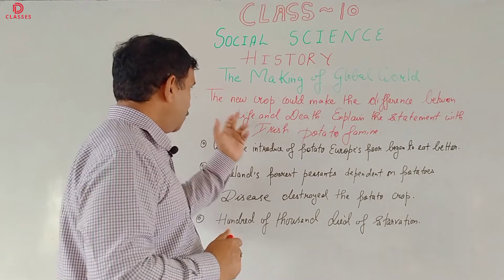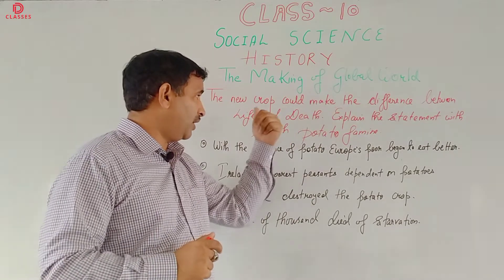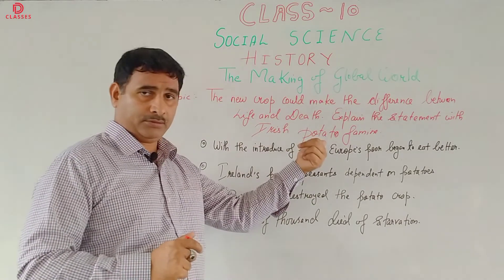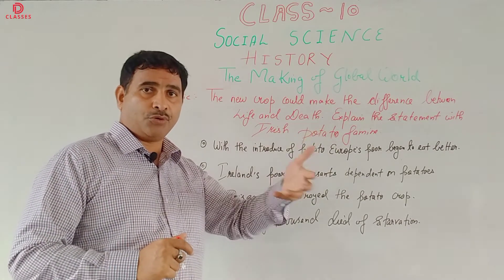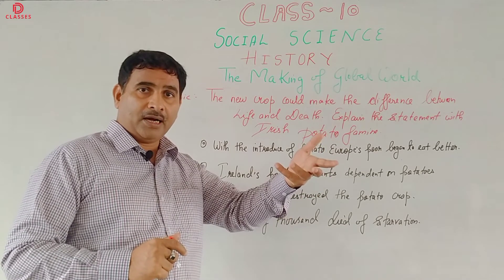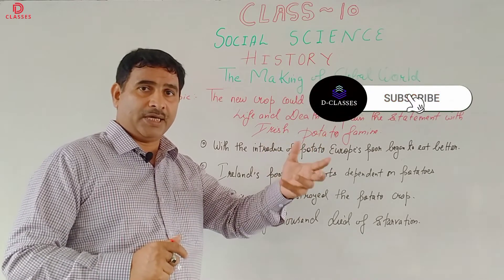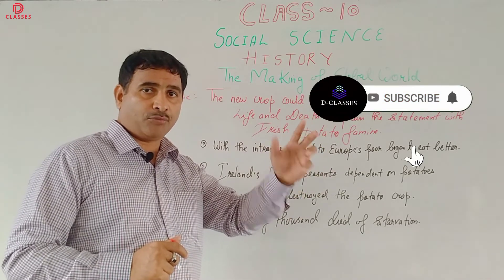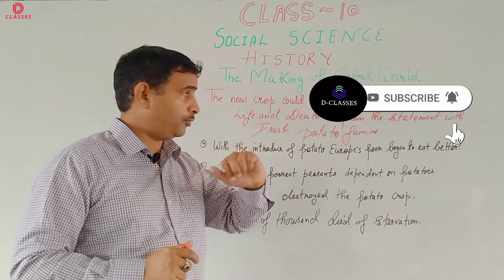The question is: a new crop could make a difference between life and death. That means with the introduction of new food, life could become better. And if something separate took place, the number of deaths also increased due to that food.